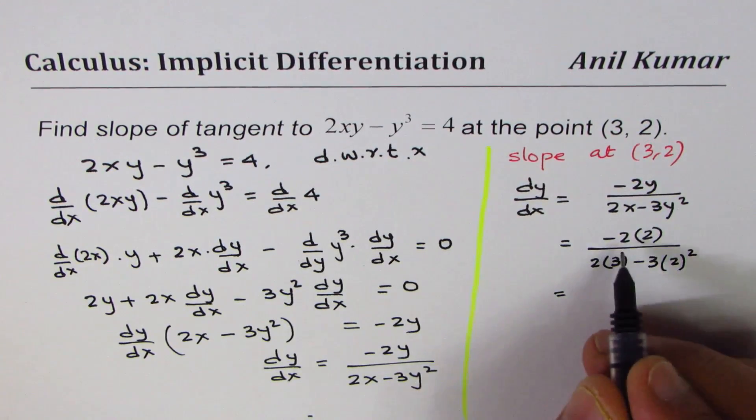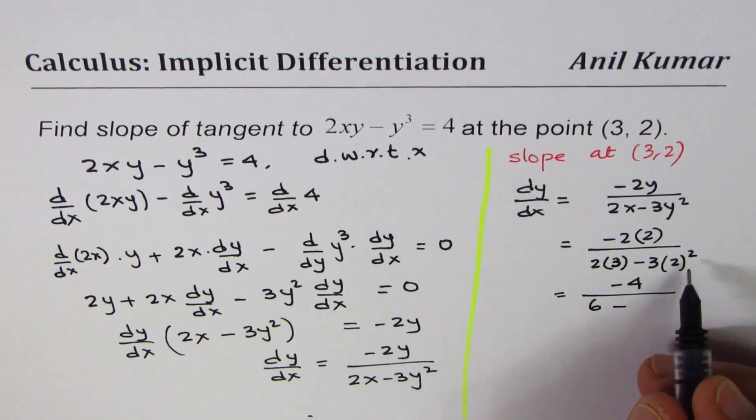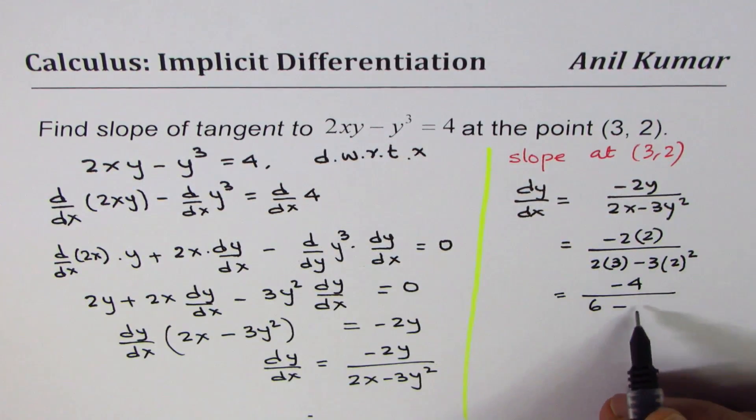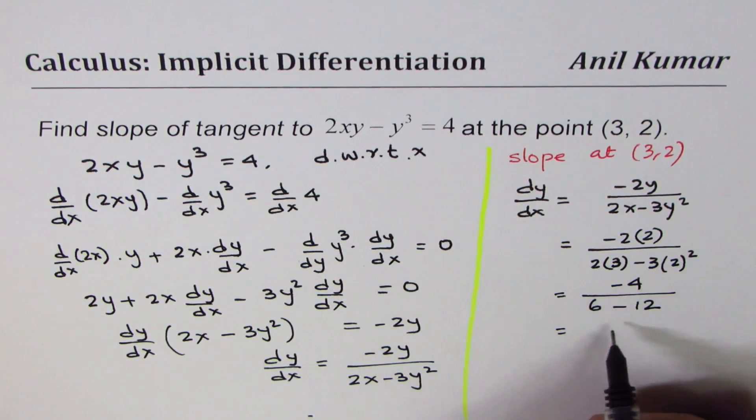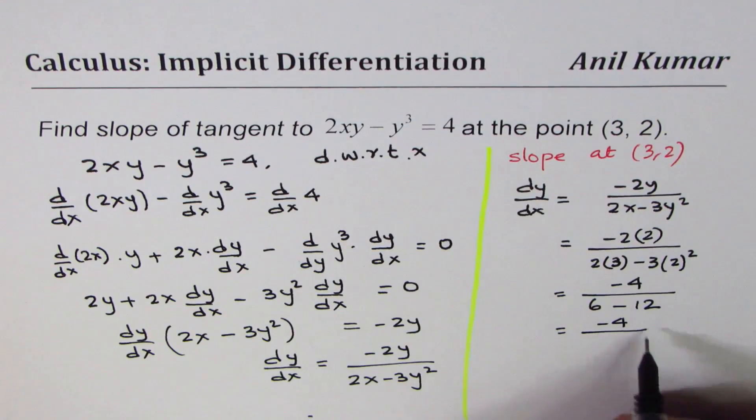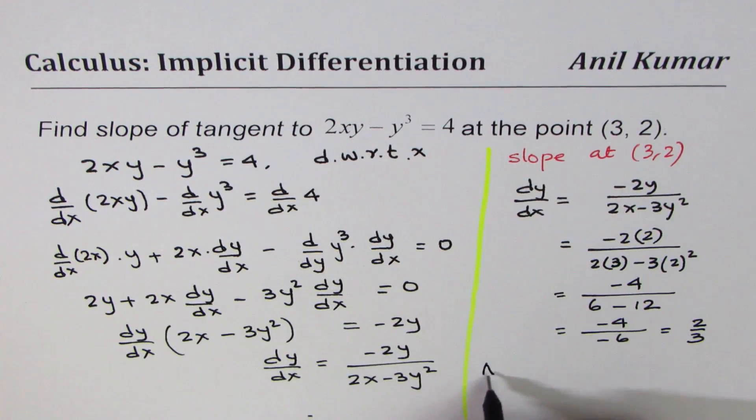That gives us minus 4 divided by 6 minus 4 times 3, which is 12. Or it is minus 4 divided by minus 6, or 2/3. So the slope at the given point is 2/3. That's our answer. The slope is 2/3.